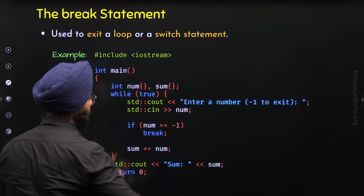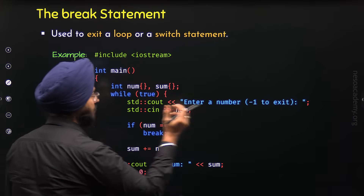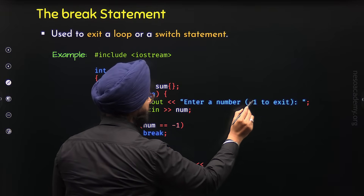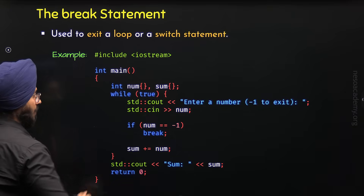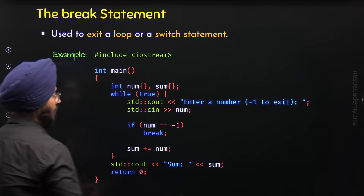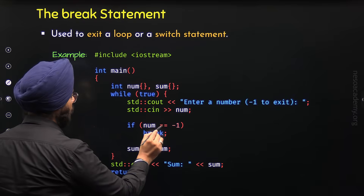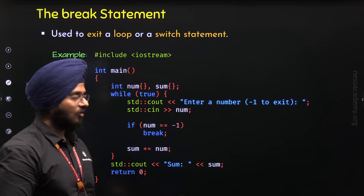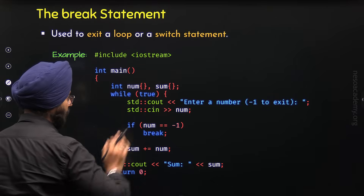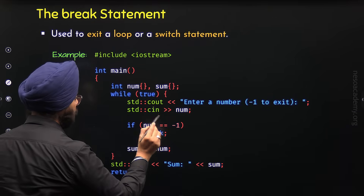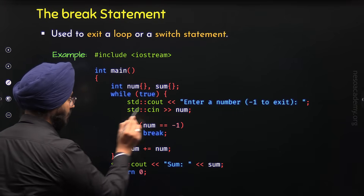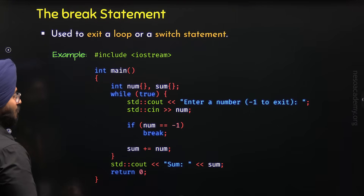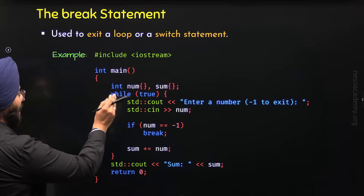Here we have these two statements. With the help of these two statements, I want to receive a number from the user. This message will be displayed on the screen: Enter a number, minus 1 to exit. The user will provide some number, which will be received in the num variable. Now here I am checking this condition: if num is equal to minus 1, then we will break from this loop. This is an infinite loop, so it will run forever. But if this condition is true, that is if the user input is minus 1, then the break statement will be encountered and this loop will terminate at this point. So with the help of the break statement, we can terminate a loop.